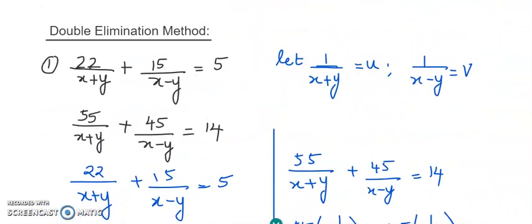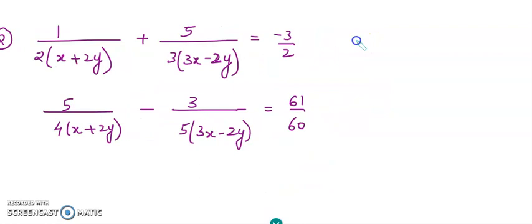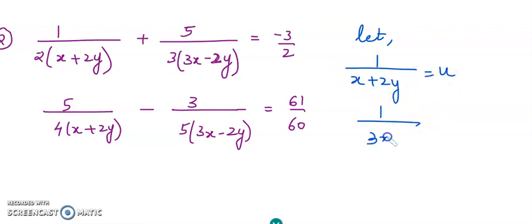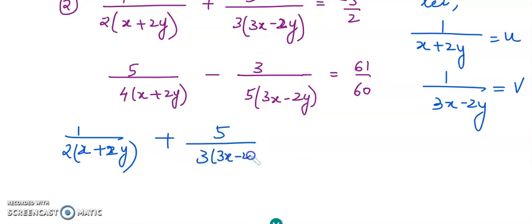The next problem I have taken — I will take you through the first step; the second elimination I will leave for you to do. Here the denominators are x plus 2y and 3x minus 2y, and both equations share these same denominators. So we suppose 1 upon x plus 2y equals u and 1 upon 3x minus 2y equals v. The equations also have fractional coefficients, making this a very long one.